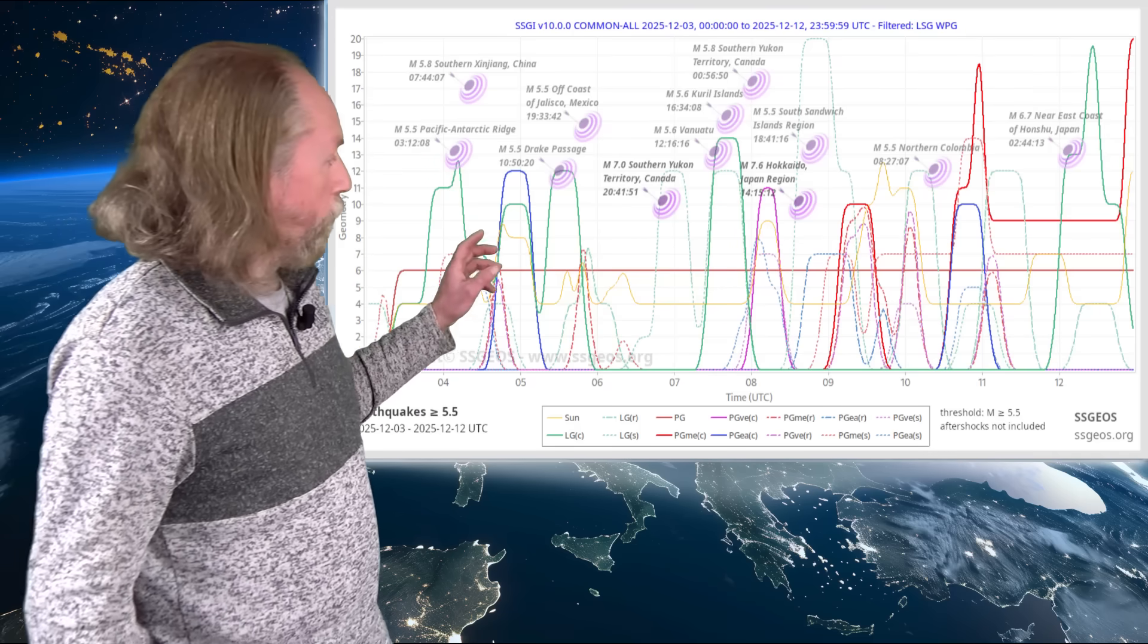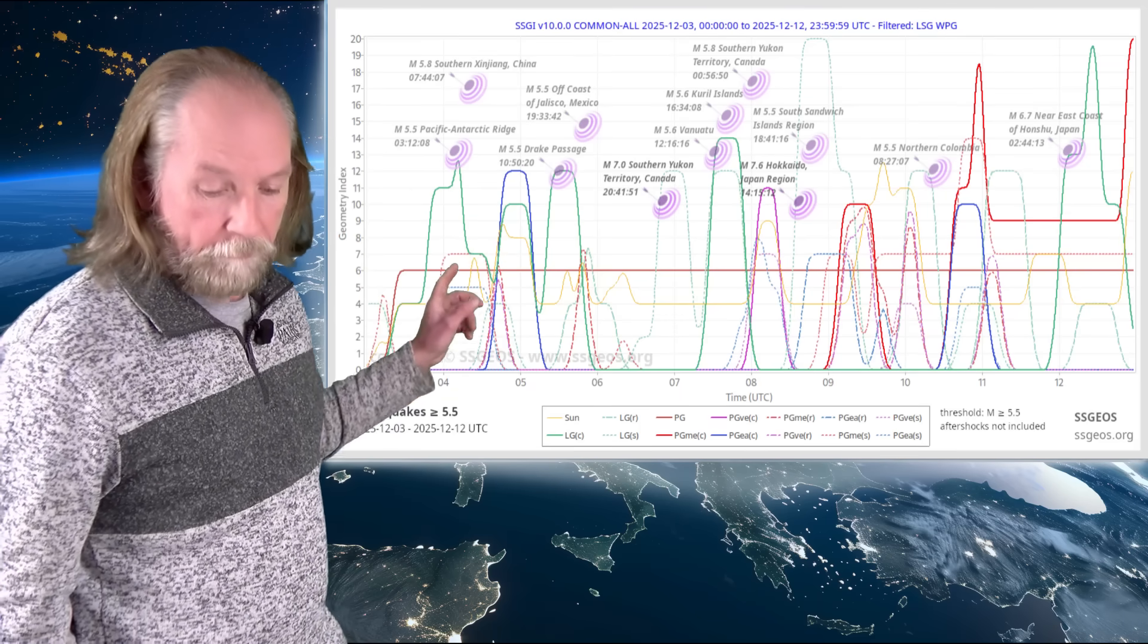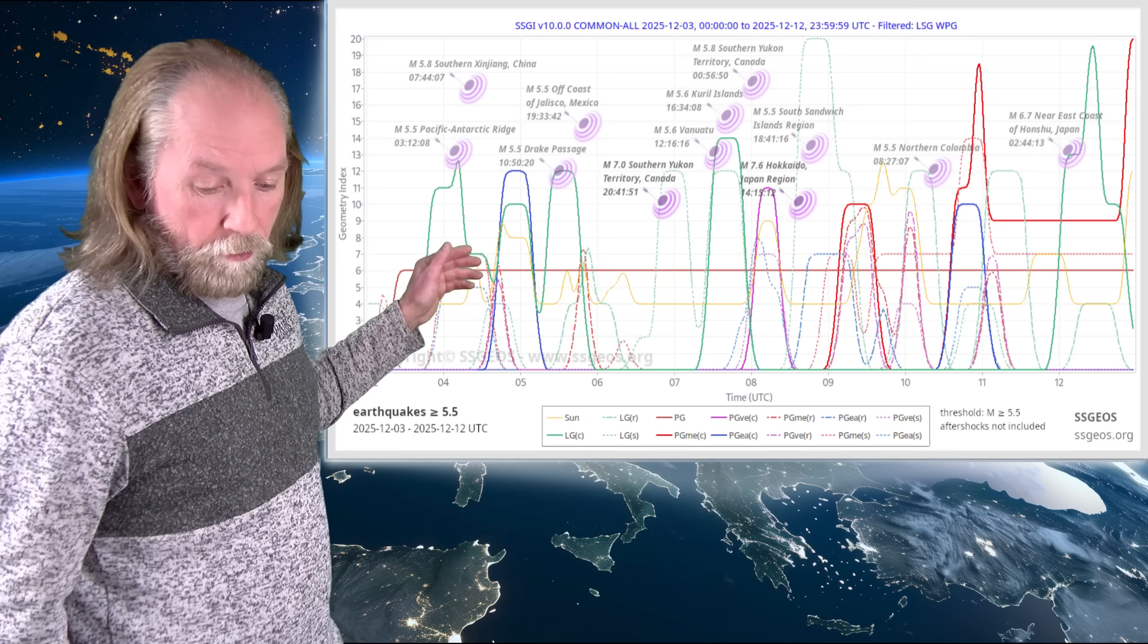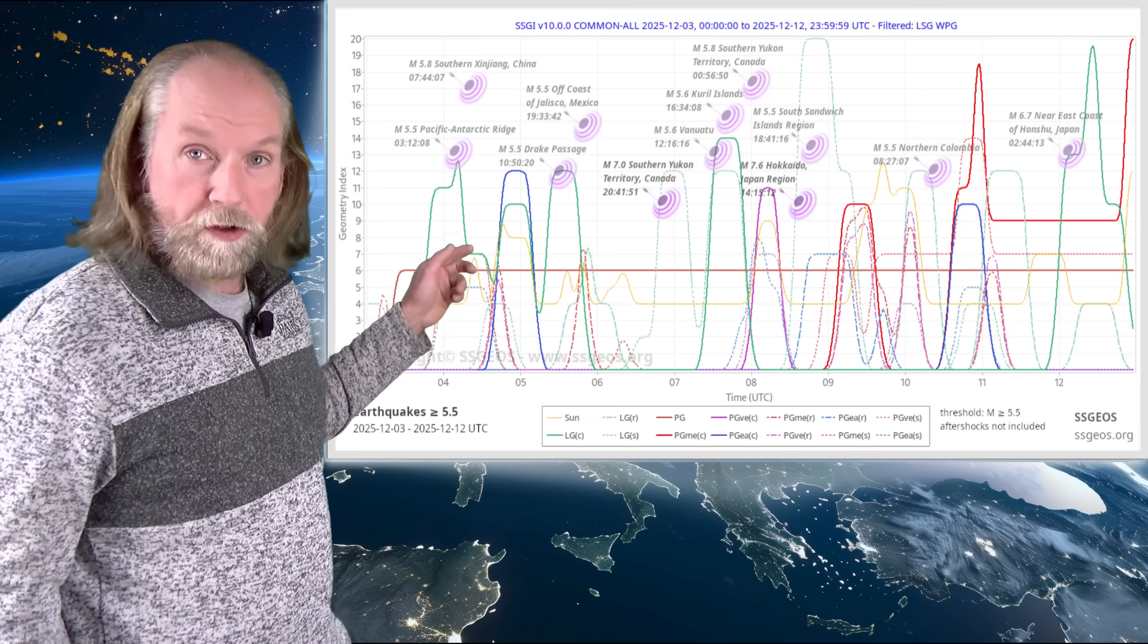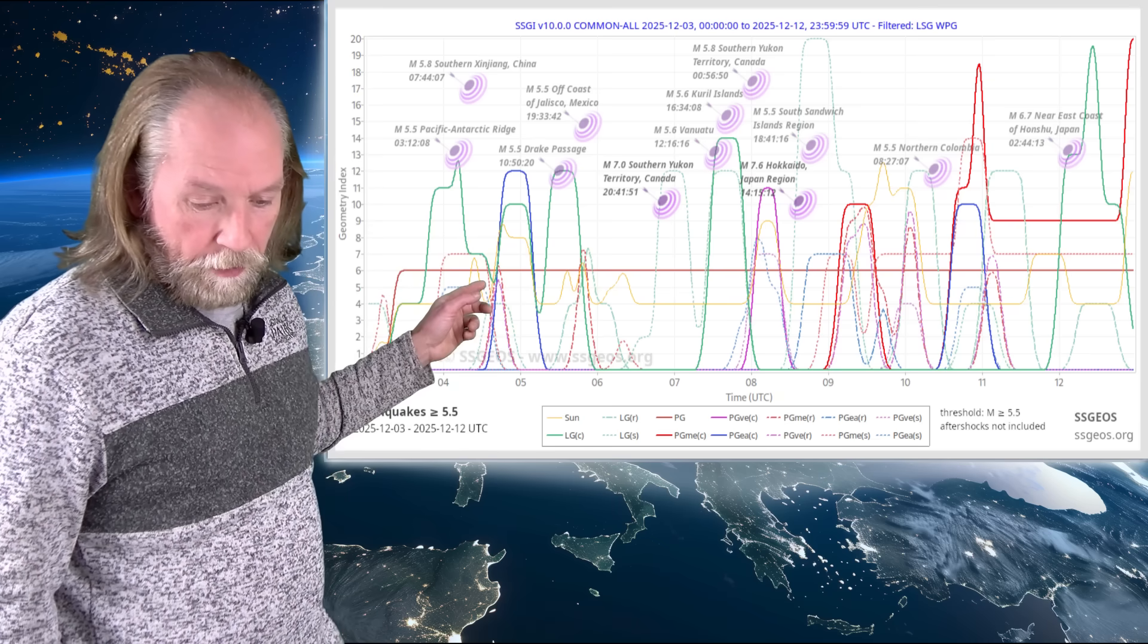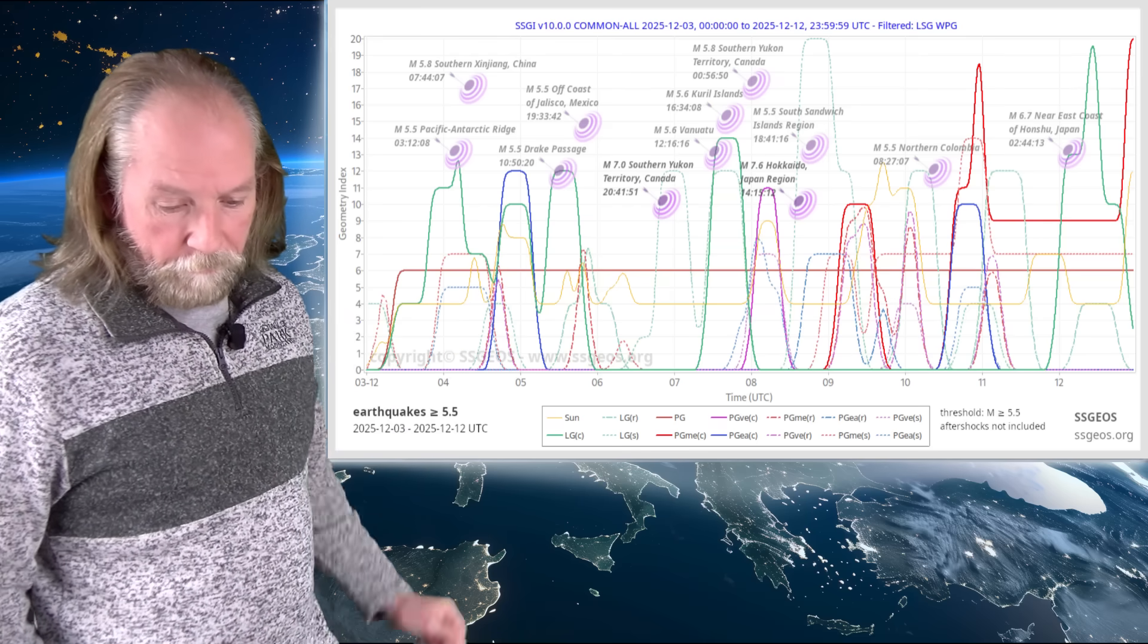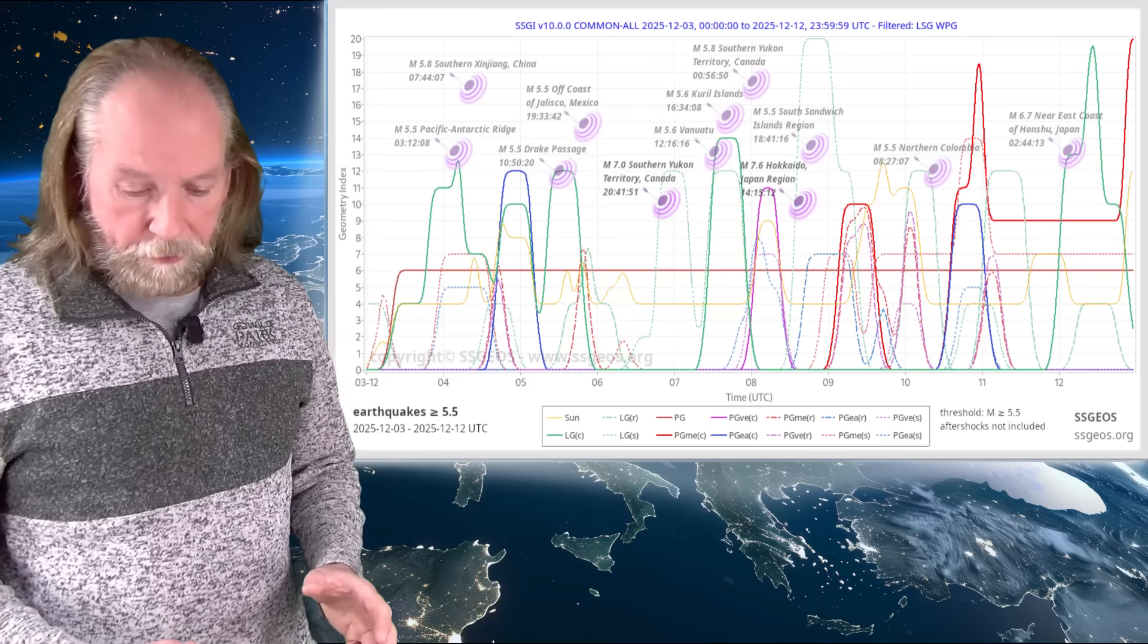On the SSGI graph we see that the lunar peaks on 4 and 5 December that I pointed out in the 3 December update. They were followed by strong earthquakes 5.5 and larger, two larger earthquakes 5.5 and 5.8 on the 4th and again following the full moon that was in between with Mars a 5.5 and 5.5 double on the 5th.